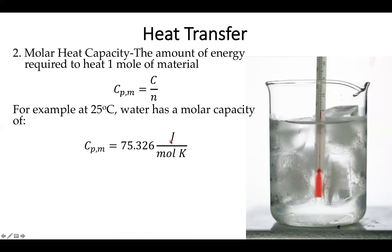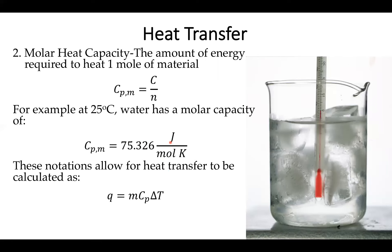This allows us to figure out the amount of heat going into or out of a system simply by knowing the temperature change. If you have the specific heat capacity, the mass of water, and the change in temperature, you know how much heat entered the system. If you know the molar heat capacity, you need the moles of the substance and its change in temperature to figure out the amount of heat entering the system.